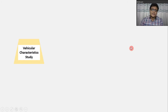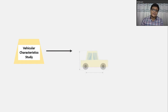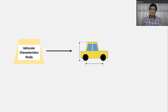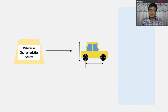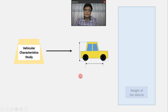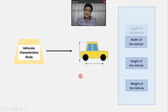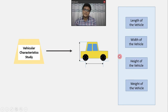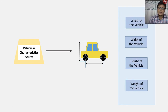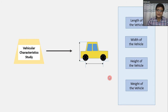Starting with the vehicular characteristic study, vehicular characteristic study is all about the specifications of the vehicles. The specifications of the vehicle include: weight of the vehicle, length of the vehicle, height of the vehicle, and width of the vehicle. In the vehicular characteristic study, we will focus on these four factors of the vehicle.